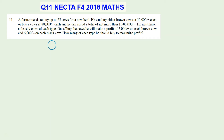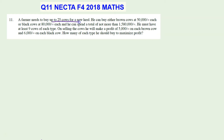Welcome to this tutorial. I'm going to solve question 11 from NECTAR Form 4 2018 math past paper. We're told a farmer needs to buy up to 25 cows for a new herd. He can buy either brown cows at 550,000 shillings each or black cows at 80,000 shillings each.